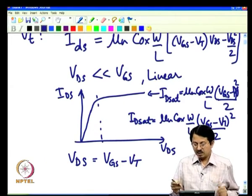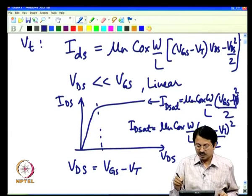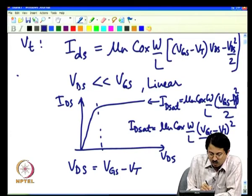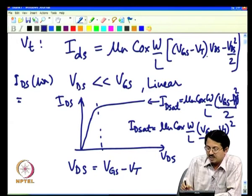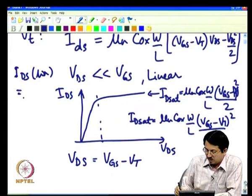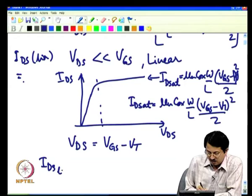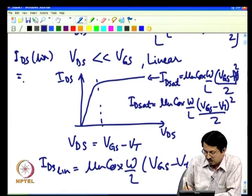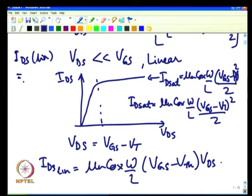In the linear region, one can ignore the VDS² term because VDS is so small. So the linear drain current can be approximated as IDS_linear = μn·Cox·(W/L)·(VGS − VT)·VDS, ignoring the quadratic part of VDS. Here Cox is the oxide capacitance per unit area, not the total capacitance.